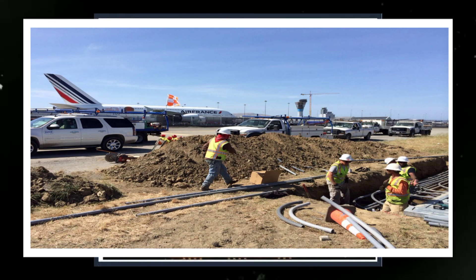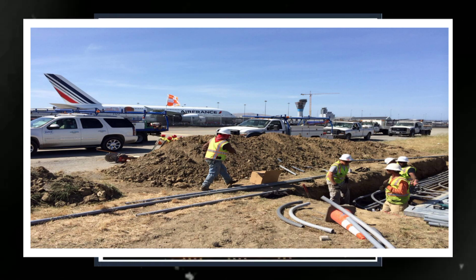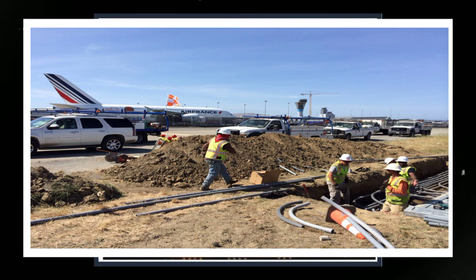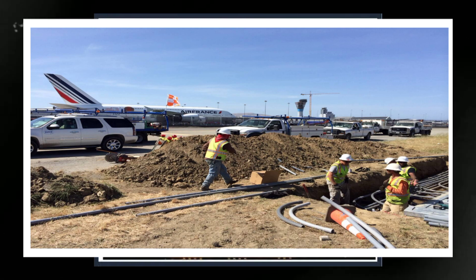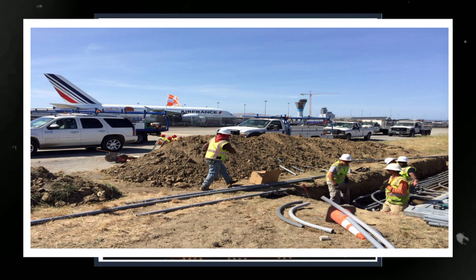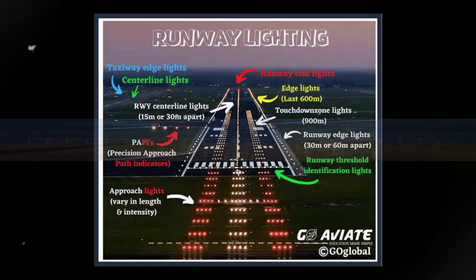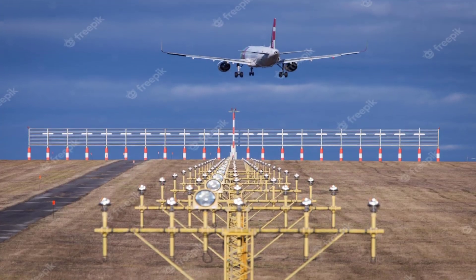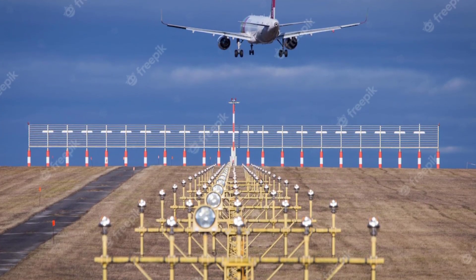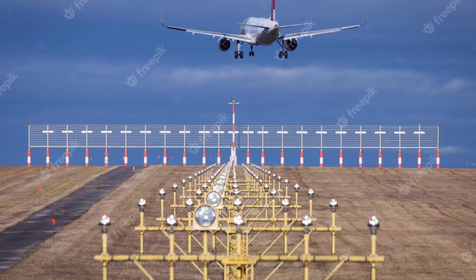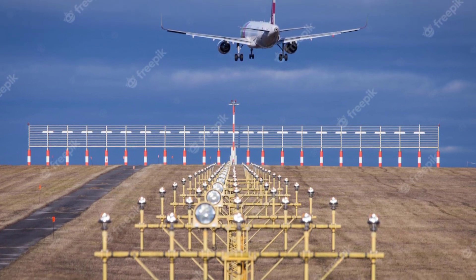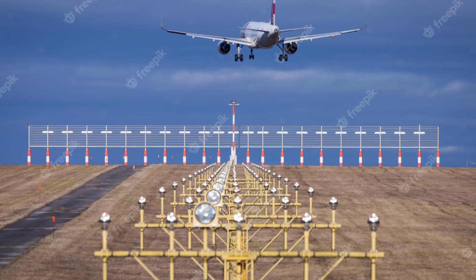Alignment guidance: the configuration and placement of the approach lights are designed to provide pilots with a precise alignment to the runway centerline and the desired glide path angle. This alignment is critical to ensure a safe landing and to avoid runway excursions. Glide path indication: many approach lighting systems incorporate a Visual Approach Slope Indicator, VASI, or a Precision Approach Path Indicator, PAPI, to aid in maintaining the correct glide path during the approach. These indicators help pilots gauge if they are too high, too low, or on the correct glide path angle for landing.